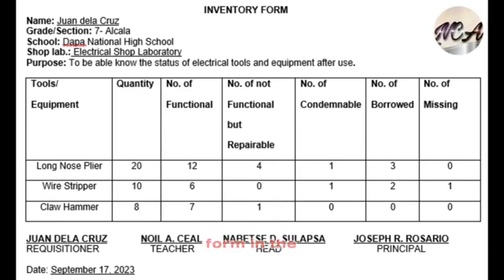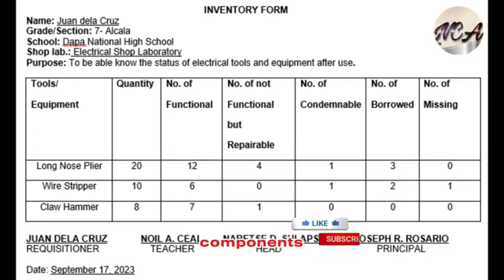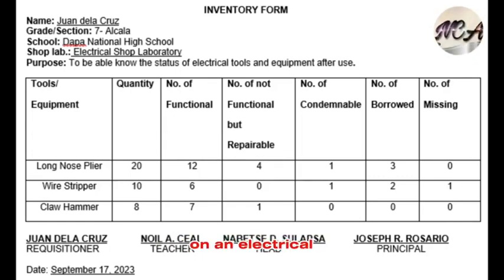An inventory form in the context of electrical work serves to track and manage electrical equipment, components, and materials used in electrical installations and maintenance. Electrical inventory forms are essential for electrical contractors, maintenance teams, and organisations involved in electrical work. They help in tracking and managing electrical components, ensuring that the right materials are available when needed, and preventing shortages or overstocking. Proper inventory management is crucial to the efficiency and cost-effectiveness of electrical projects.